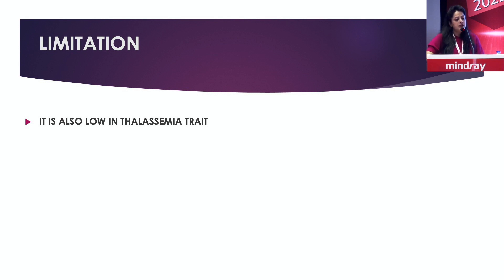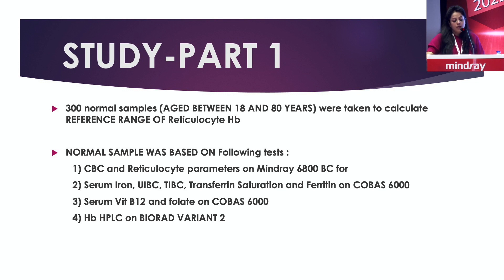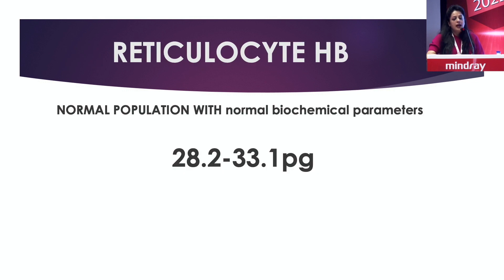We did a study where the first part was to calculate the normal reticulocyte hemoglobin. We took 300 samples, ran a CBC and reticulocyte analysis on the Mindray BC-6800, did serum iron, UIBC, TIBC, and ferritin on Cobas 6000, vitamin B12 and folate levels, and HPLC on all cases. When all data was completely normal, we calculated the reticulocyte hemoglobin and found our values were 28.2 to 33.1 picograms as the normal reference range.